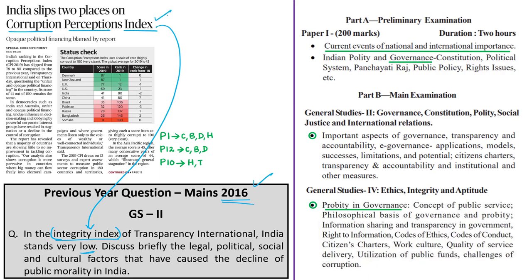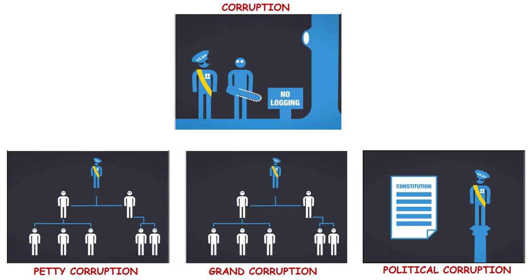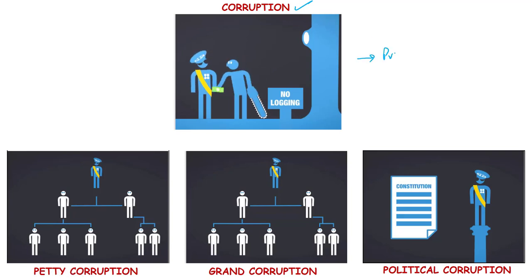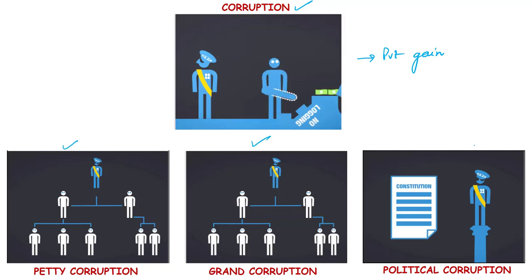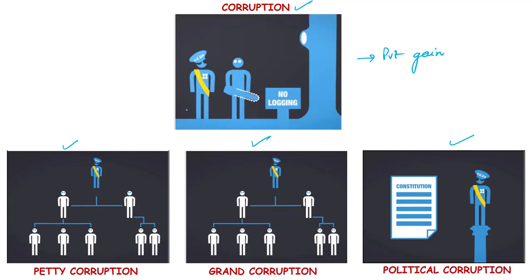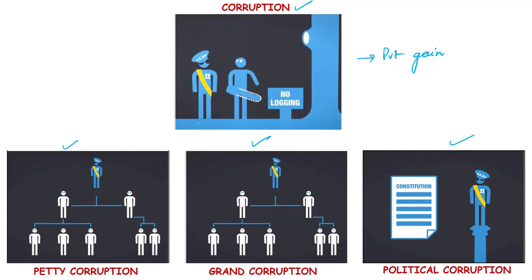This topic is important from the examination point of view. We'll discuss corruption and the index of 2019 and its findings globally and with respect to India. The relevant syllabus is given for your reference. Corruption is generally defined as the abuse of entrusted power for private gain. According to Transparency International, corruption can be classified as grand corruption, petty corruption, and political corruption, based on the amounts of money lost and the sector where it occurs.